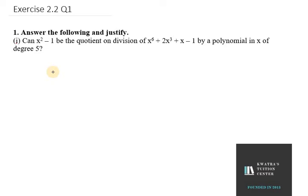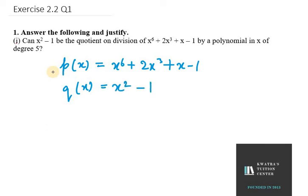So in this case, what we are given with is P(x), P(x) equals x raised to the power 6 plus 2x³ plus x minus 1 and we are given with quotient, quotient is x² - 1. Now it says that g(x), degree of g(x) is 5.